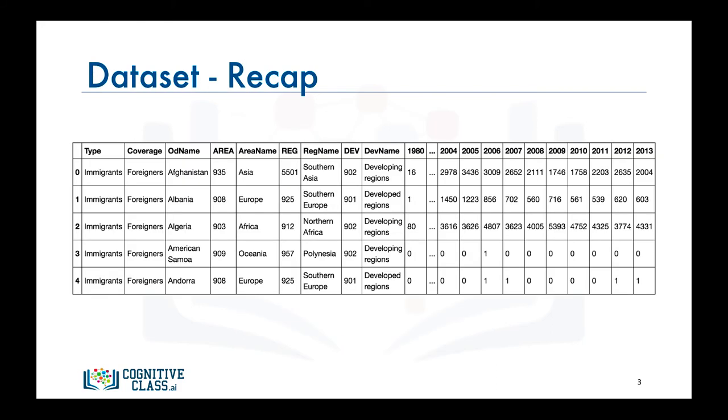Before we go over the code to do that, let's do a quick recap of our dataset. Recall that each row represents a country and contains metadata about the country, such as where it is located geographically and whether it is developing or developed. Each row also contains numerical figures of annual immigration from that country to Canada from 1980 to 2013.